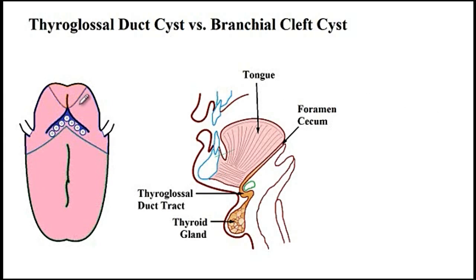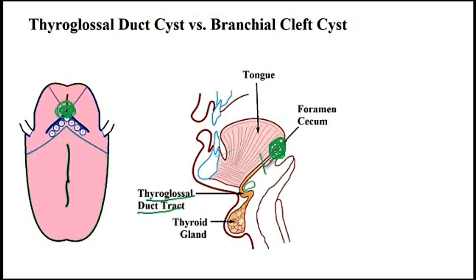During embryonic development, the thyroid tissue develops at a place that corresponds to the foramen cecum of the tongue. So if we look at the sagittal plane, it would be initially in here that the primitive thyroid is formed, and then it makes its way all the way down to the neck. The track that it makes while making its way down to the neck is referred to as the thyroglossal duct track, and normally this track gets obliterated.